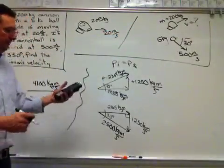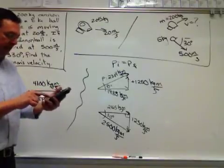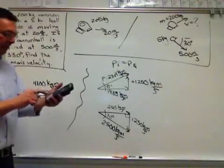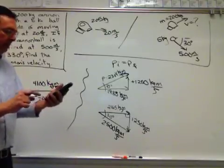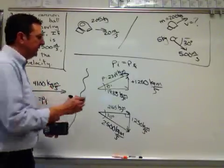Then the direction, inverse tangent, second function, tangent of opposite, 1250 divided by the adjacent, 1935 equals 32.9 degrees.